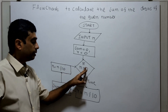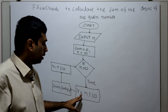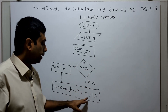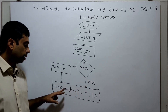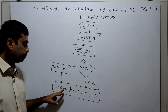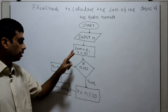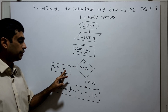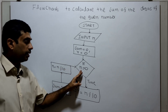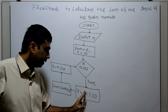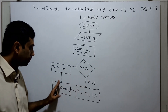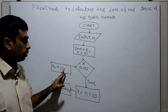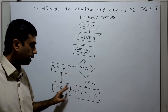So, n greater than 0 — if true, r equal to n mod 10. n mod 10 returns the remainder of the given number, which gets stored in variable r. Sum equal to sum plus r, so the remainder value gets added to sum. Then n equal to n divided by 10, which is integer division — one digit gets removed. This loop continues while n is greater than 0.